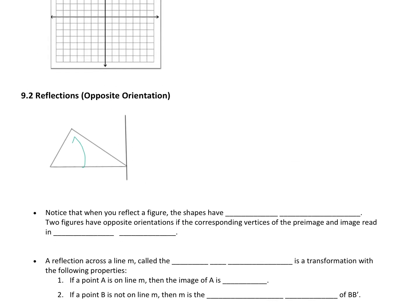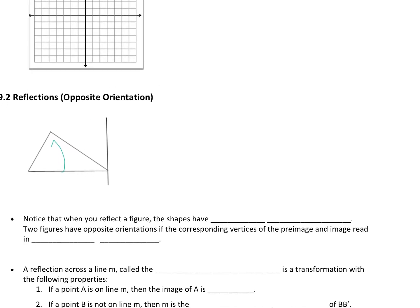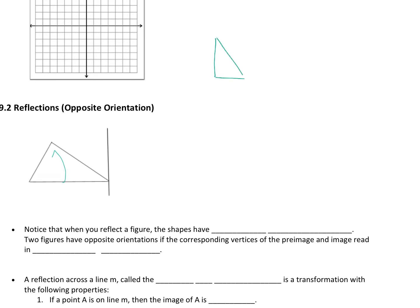We're going to think back to 9.1 real fast. If I have this triangle A, B, C and I slide it over to A prime, B prime, C prime, the way I named them — A to B to C — is moving counterclockwise. The opposite of the direction the hands move on a clock. Counterclockwise.